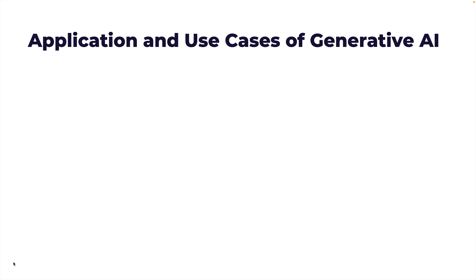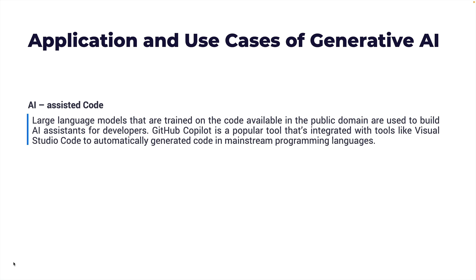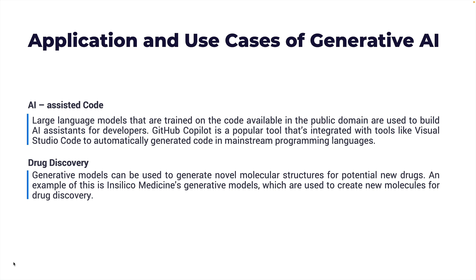One of the most popular use cases is AI-assisted code. Large language models trained on code available in the public domain are used to build AI assistants for developers. For example, GitHub Copilot is a popular tool integrated with IDEs like Visual Studio Code to automatically generate code in mainstream programming languages like Python and Go. Similarly, Gen AI is used in drug discovery — it is used to generate novel molecular structures for potential new drugs, with InSilico Medicine's generative models being an example used to create new molecules.